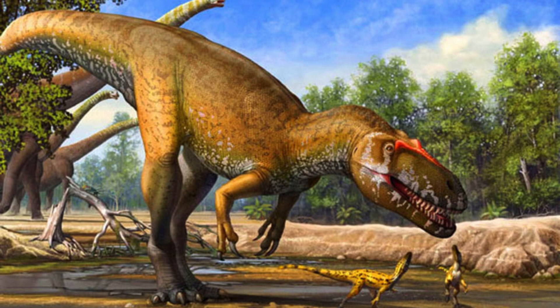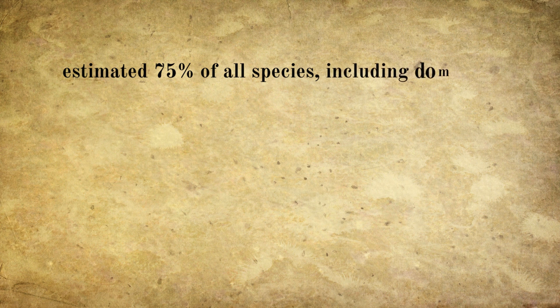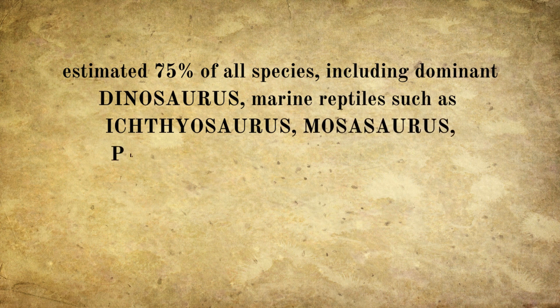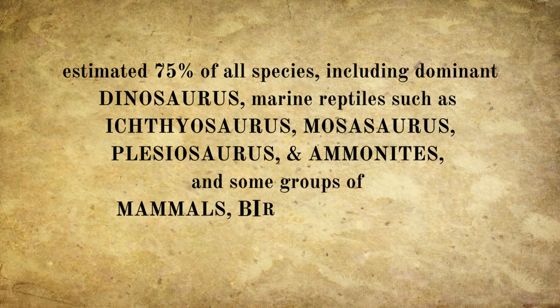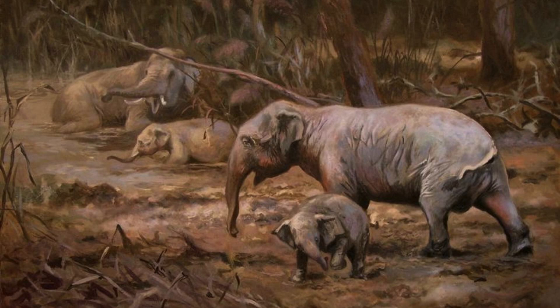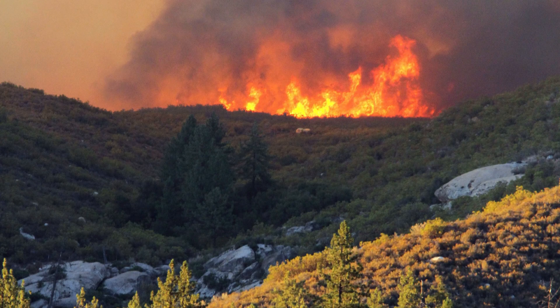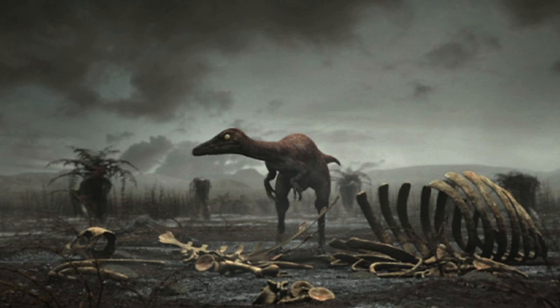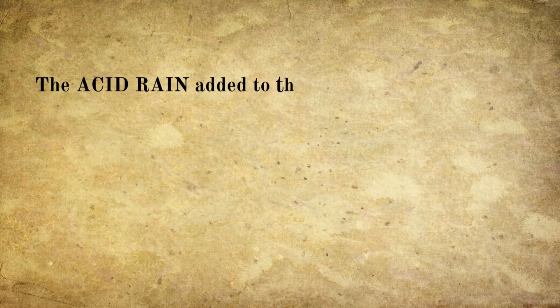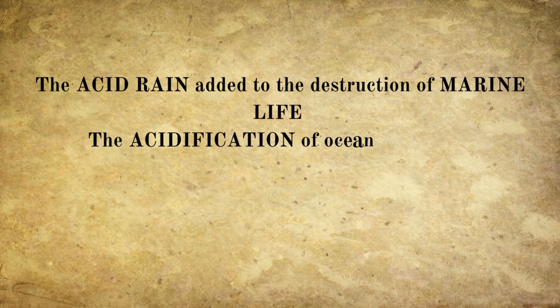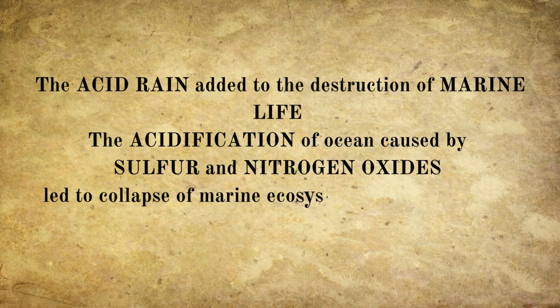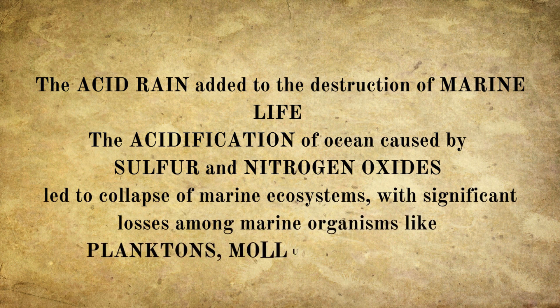The most notable effect was the extinction of non-avian dinosaurs. It is estimated that about 75% of all species went extinct, including dominant dinosaurs, marine reptiles like ichthyosaurs, mosasaurs, and plesiosaurs, as well as ammonites, plant species, and some groups of mammals, birds, and insects. The collapse of the food chain and ecosystem restructuring allowed mammals and birds to rapidly diversify and become the dominant land animals. The blocking of sunlight by debris caused a period of darkness preventing photosynthesis, and acid rain from the asteroid impact further contributed to the destruction of marine life, collapsing marine ecosystems.